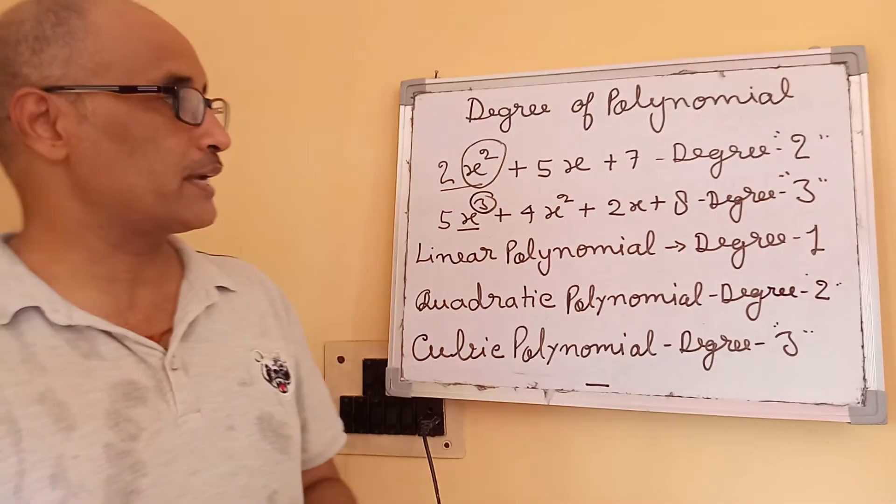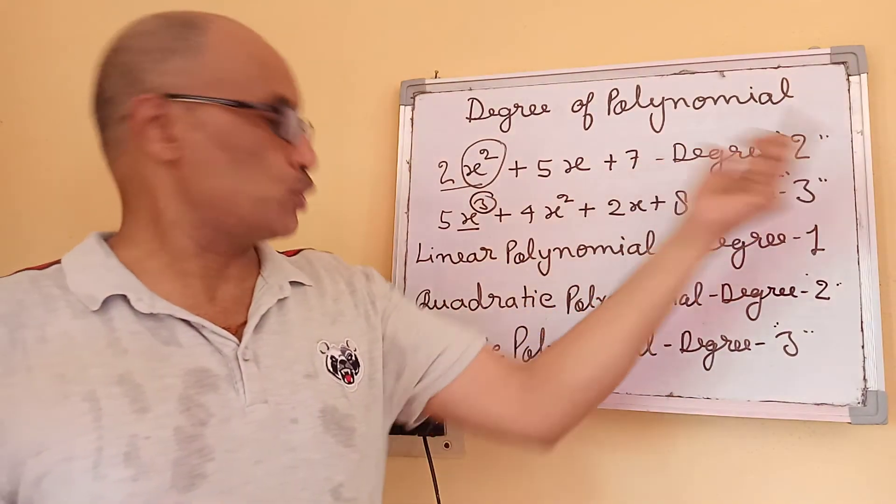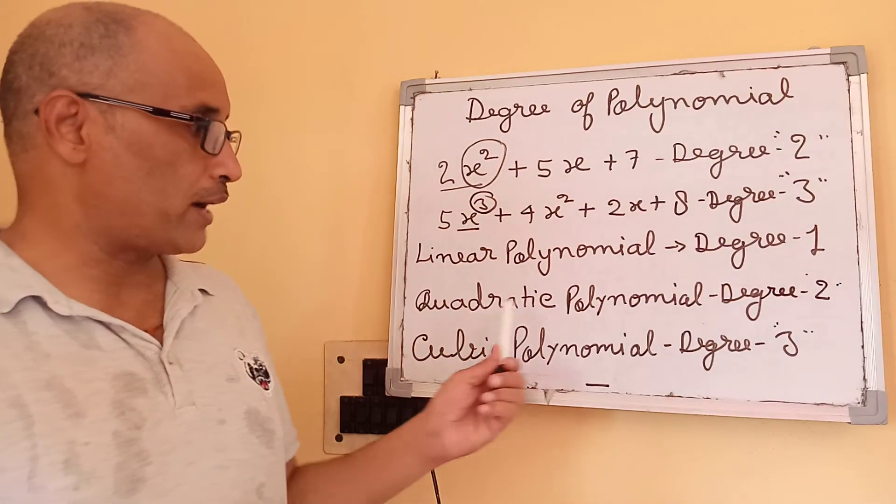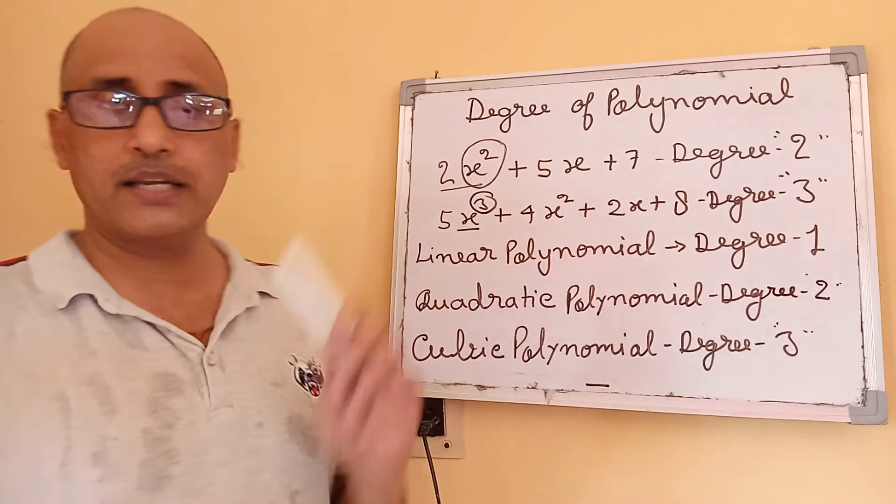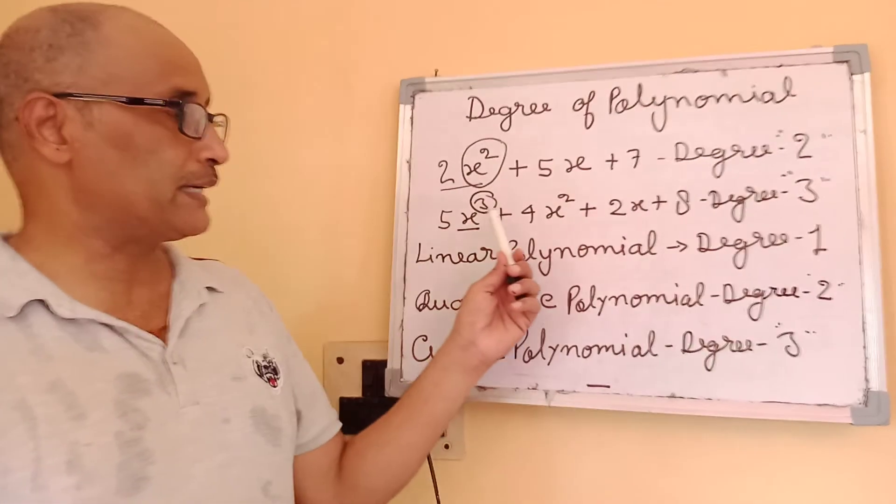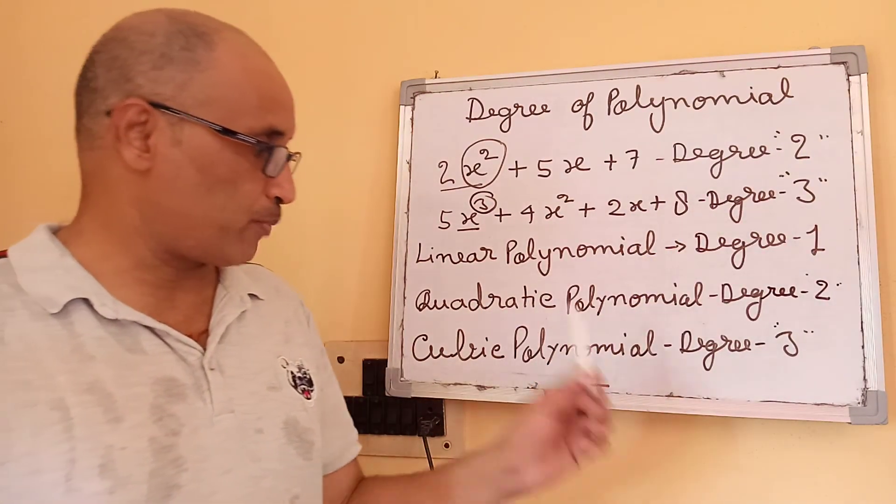if you see the first equation, you will find that it has degree 3. So it is called a cubic polynomial.